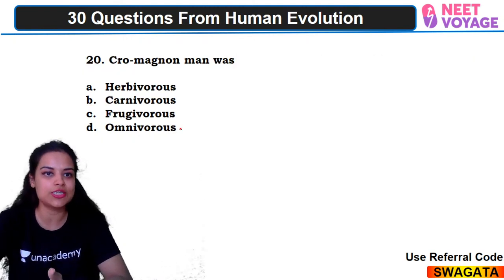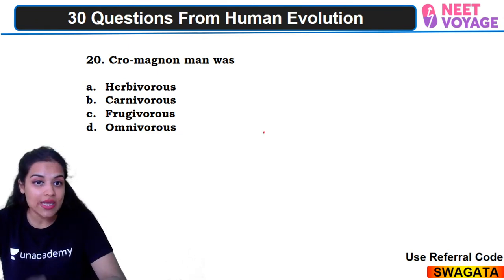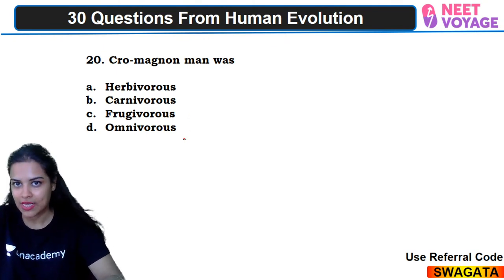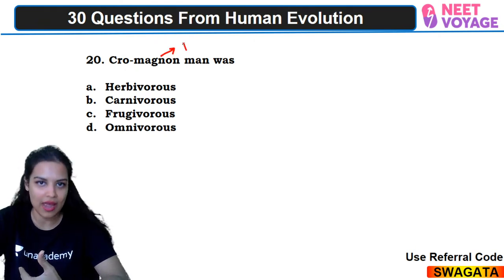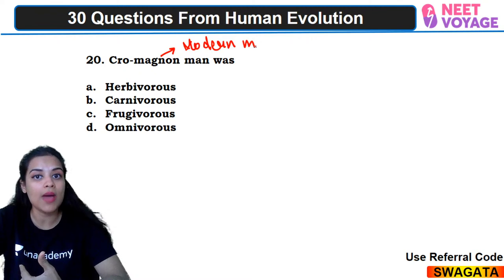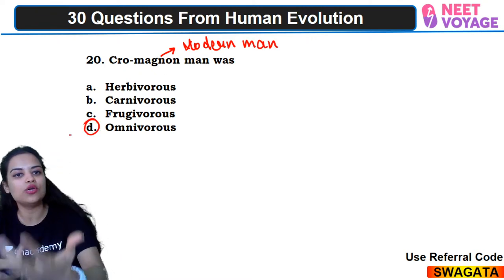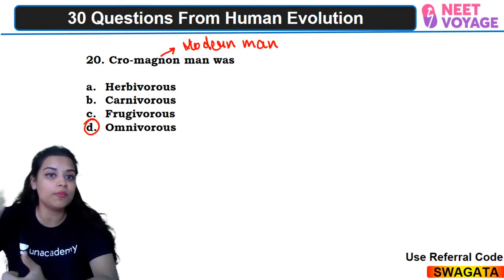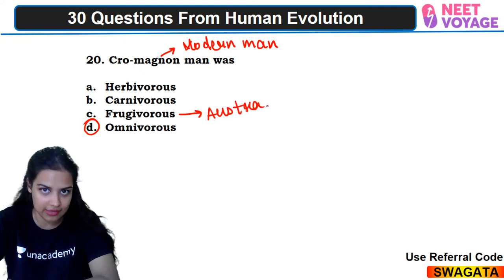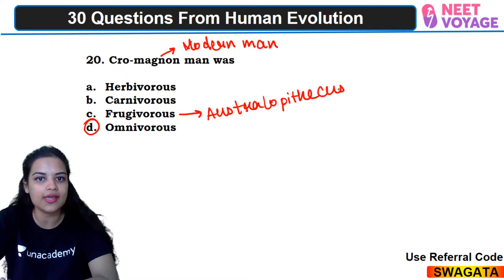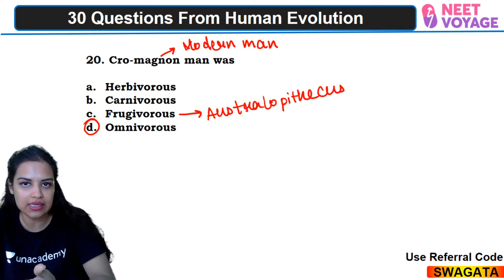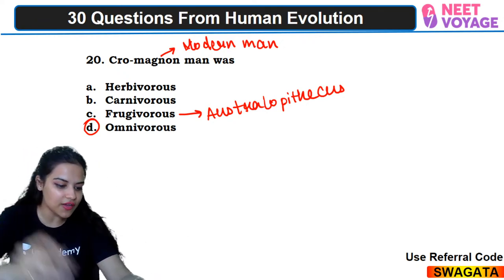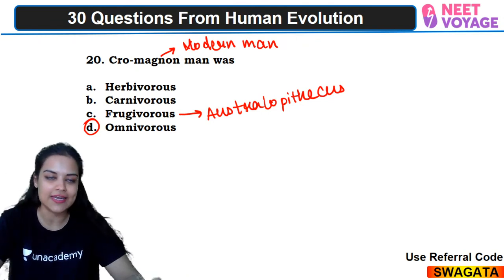Twentieth question: Cro-Magnon man was what — heavy wars, carnivores, frugivores, or omnivores? Just like we are omnivores, and we evolved from Cro-Magnon man, Cro-Magnon man was also omnivores. Frugivores — fruit eaters — was your Australopithecus. Cro-Magnon man hunted, ate raw meat and cooked meat. So D — omnivores — would be the right answer. Divyansh and Chandrasekhar answered correctly.